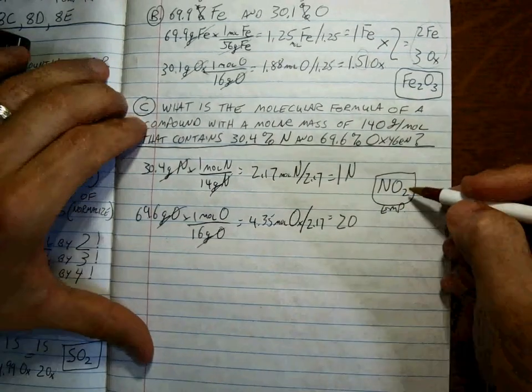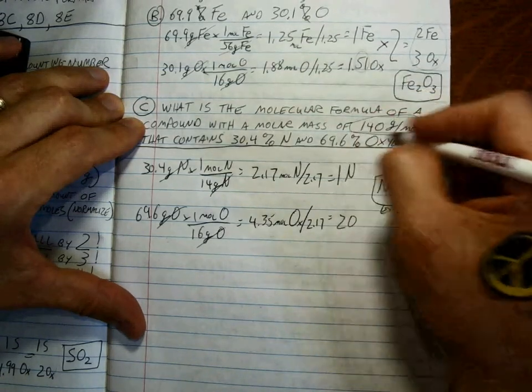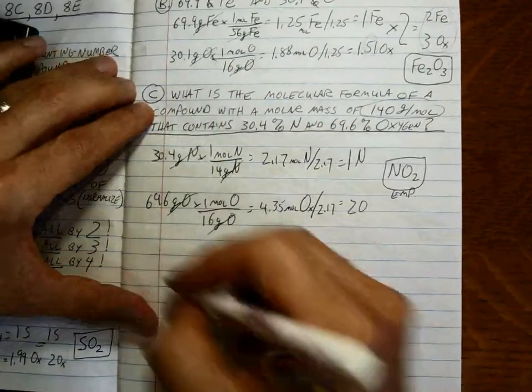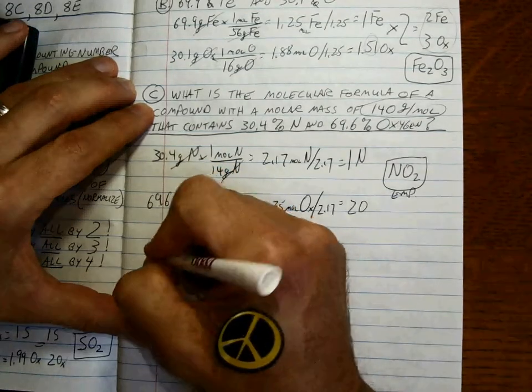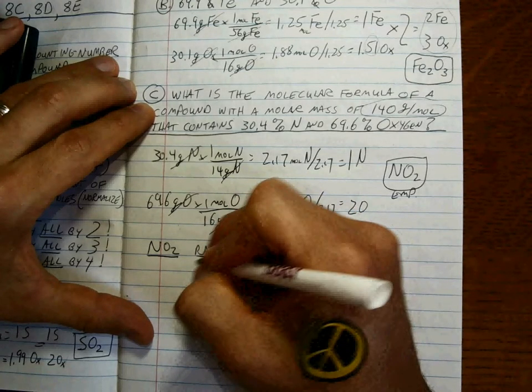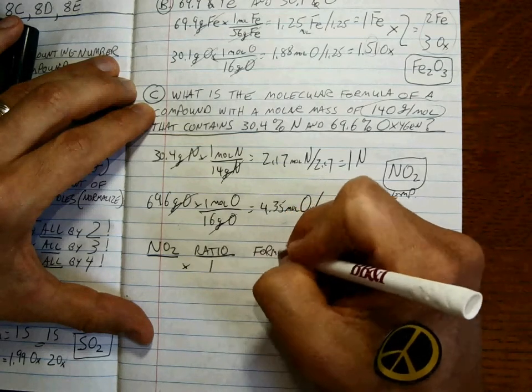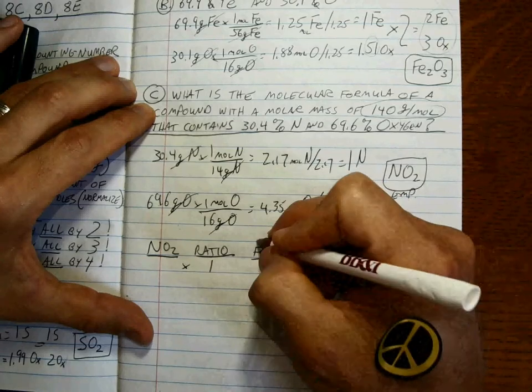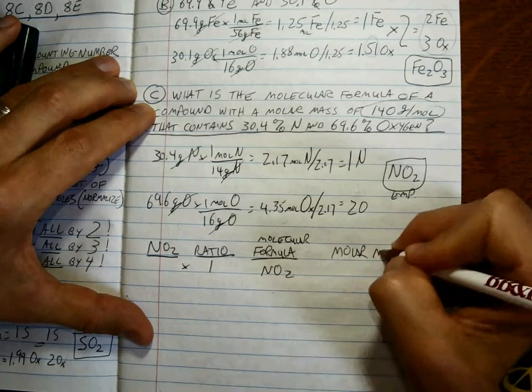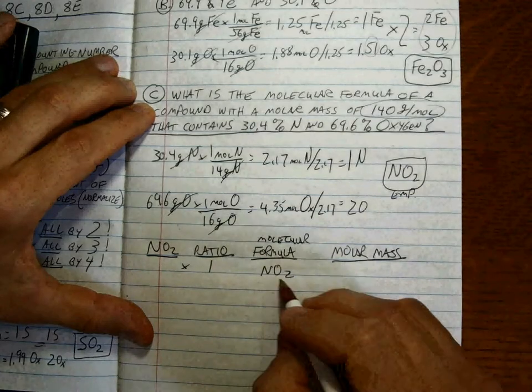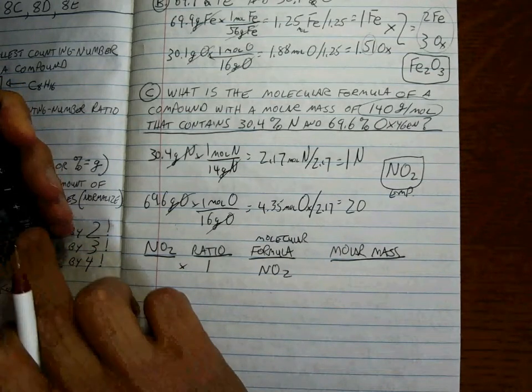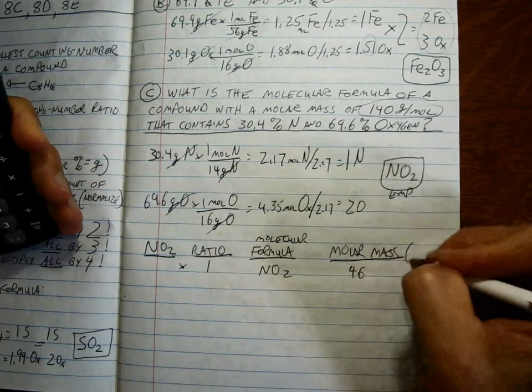But remember, the molecular formula is sort of some ratio of this. And it has a molar mass of 140 grams per mole. So how do we go about doing that? Well, this is what I like to do. NO2. The ratio times one. The molecular formula would be NO2, and the molar mass would be what? The molar mass would be 14 plus 32 of 46 grams per mole.